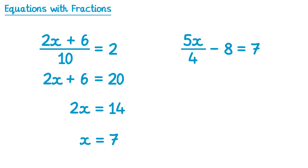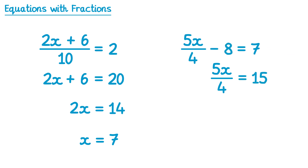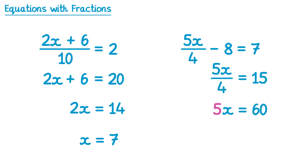For this final equation we start with the subtract 8 — we add 8 to both sides. The 8s cancel on the left, leaving the fraction 5x over 4, and on the right 7 plus 8 is 15. Then we multiply by 4 on both sides to deal with the divide by 4 — the 4s cancel on the left, leaving 5x, and on the right 15 multiplied by 4 is 60. Finally, dividing by 5 on both sides gives 5x ÷ 5 = x, and 60 ÷ 5 = 12.